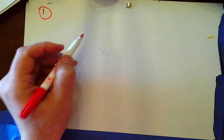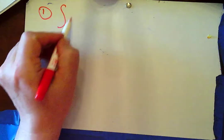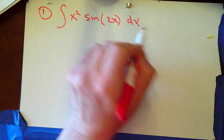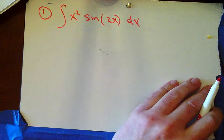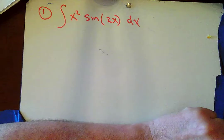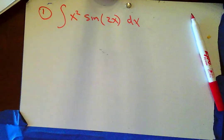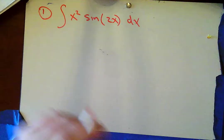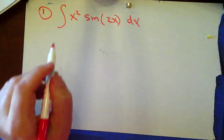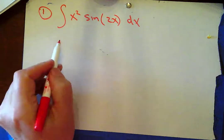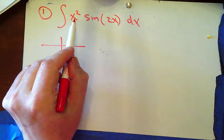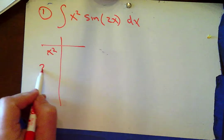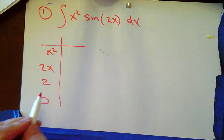Here's number one — why don't you do this one? This is the integral of x squared sine 2x dx. All right, so did you do it? Are you back? Do you feel good about it? I'm going to do tabular because otherwise I'd have to do by parts twice. So I've got x squared, I've got 2x, I've got 2, I've got 0.